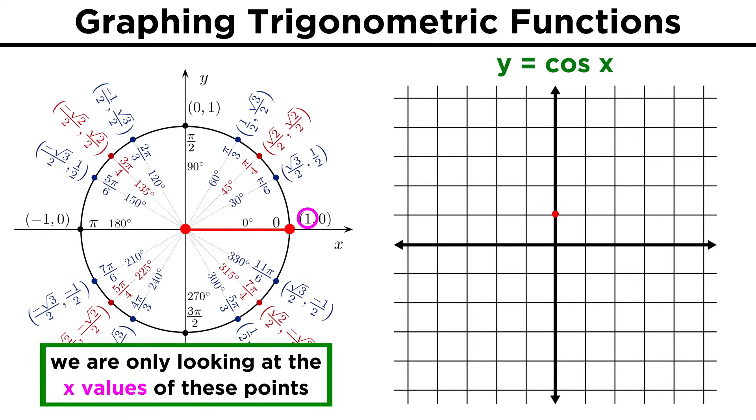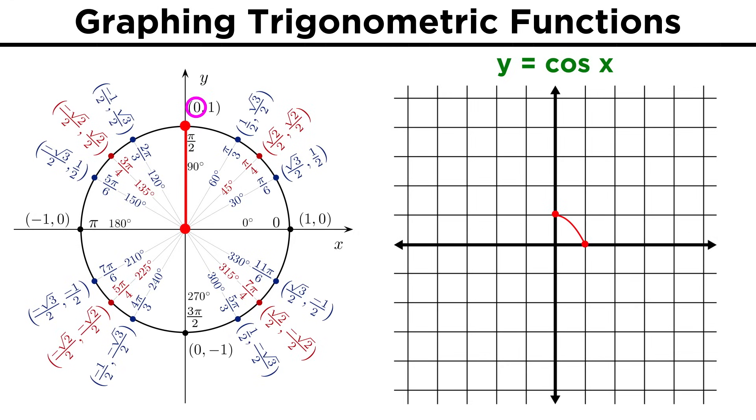This will make sense if we refer to the unit circle again, and see that the cosine of zero is one. That means the function must start up here. Then the cosine decreases until we get to zero at half pi, then goes towards negative one at pi, then it's back to zero at three halves pi, and then up to one at two pi, after which things repeat.